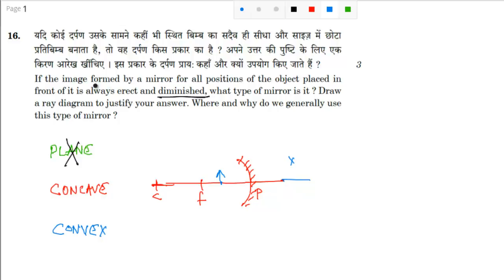If you put an object in between center of curvature and focus, you will get an image here in between center of curvature and infinity, and that too will be inverted as well as magnified. So concave mirror is again out of the discussion.